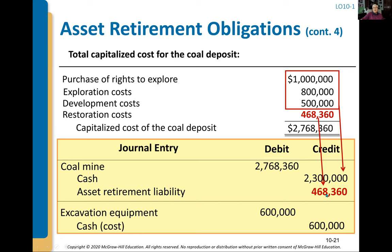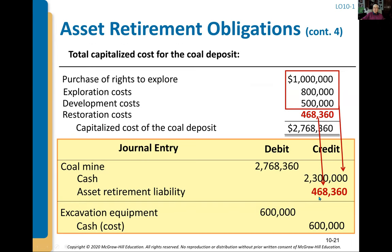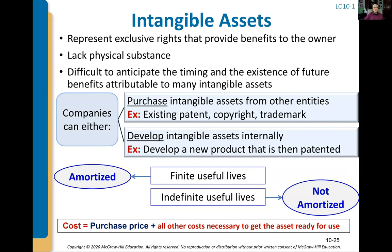This may seem like a difficult concept. When this rule was first passed it was a hardship, because as a controller I'd also have to record interest expense on that $468,000 to grow it to the $590,000 in the future. What you need to know for this chapter is that the future restoration cost is part of the acquisition cost. It reflects faithful representation of the economics of the transaction, and that piece of the asset cost will get depreciated. When we actually pay the $590,000 three years from now, there won't be any additional expense at that time.